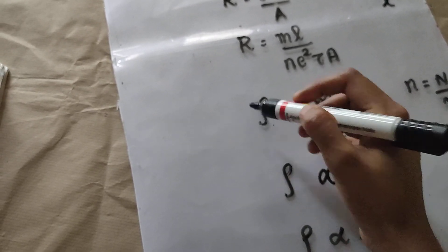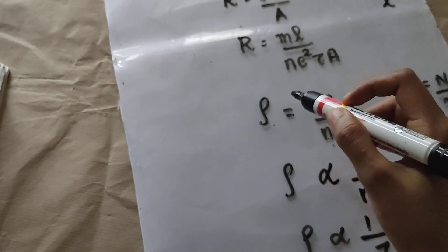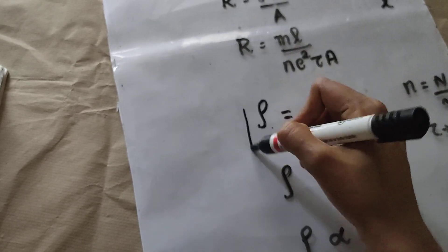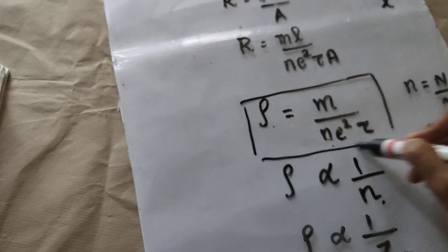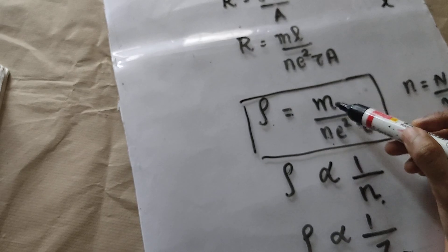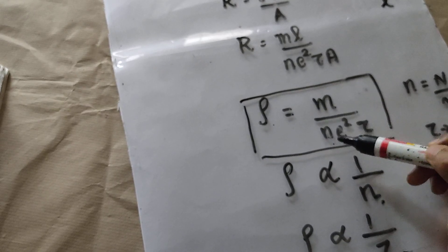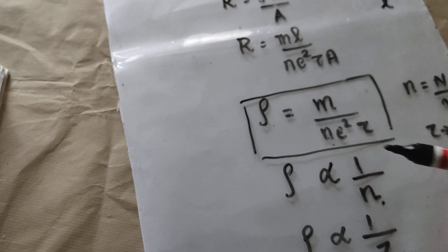So the relation is: resistivity rho = M / (N × e² × tau). Thank you.